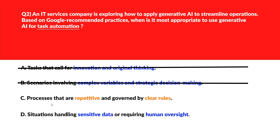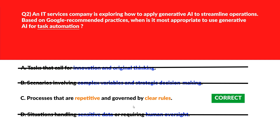Option C says processes that are repetitive and governed by clear rules. Gen AI is well suited for automating structured processes that follow predictable patterns — let's keep it. Option D says situations handling sensitive data or requiring human oversight. Sensitive tasks require judgment and oversight that automation cannot replace — wrong answer. We'll lock option C as the correct choice.